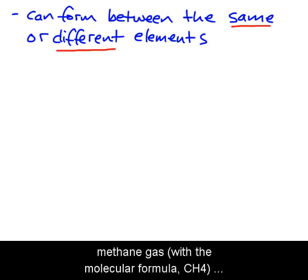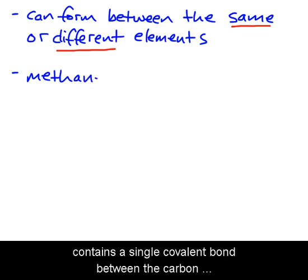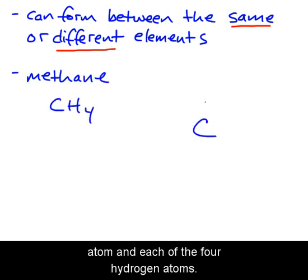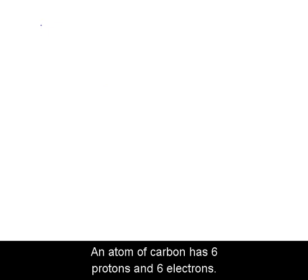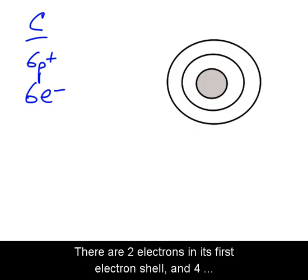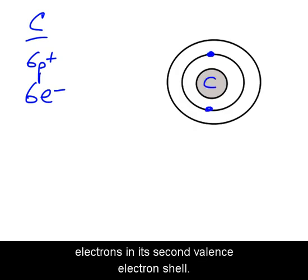Covalent bonds can form between atoms of the same or different elements. For example, a molecule of methane gas with the molecular formula CH4 contains a single covalent bond between the carbon atom and each of the four hydrogen atoms. An atom of carbon has six protons and six electrons — two electrons in its first electron shell and four electrons in its second valence electron shell.